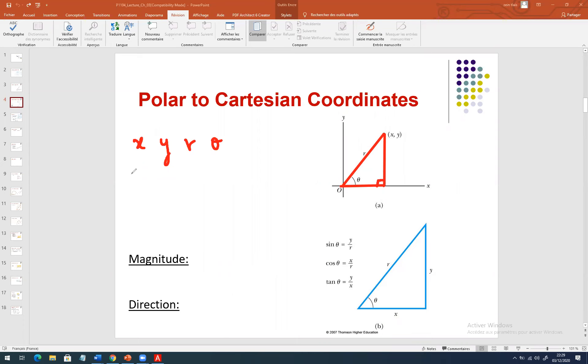Cosine theta equals the adjacent side, equal to x, divided by r. So x equals r cosine theta. Sine theta equals the opposite side, equal to y over r. So y equals r sine theta.